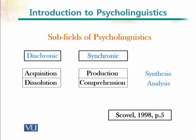Let's have a look at some sub-fields of psycholinguistics through this picture. You can see there are four major areas: acquisition, production, dissolution, and comprehension. Acquisition and production involve synthesis of linguistic knowledge in the mind, while dissolution and comprehension involve analysis of linguistic knowledge. Acquisition and dissolution are diachronic — they happen over a certain period of time — whereas production and comprehension are synchronic, happening at a particular moment.